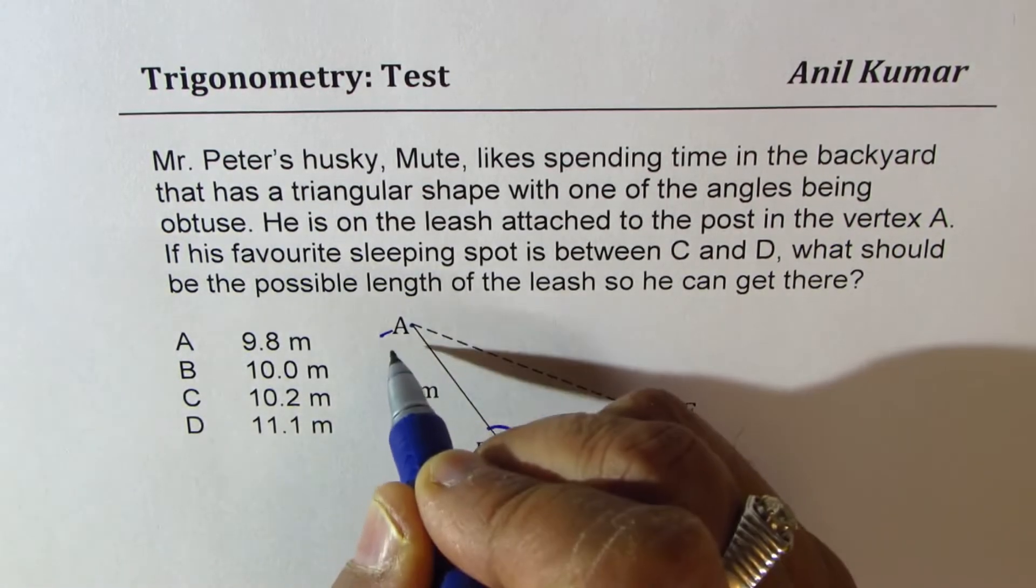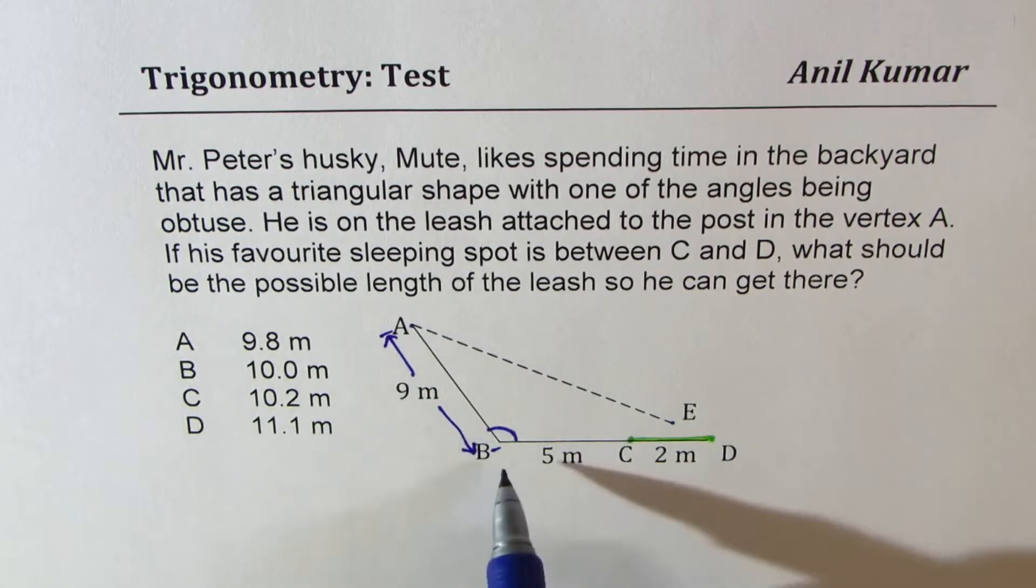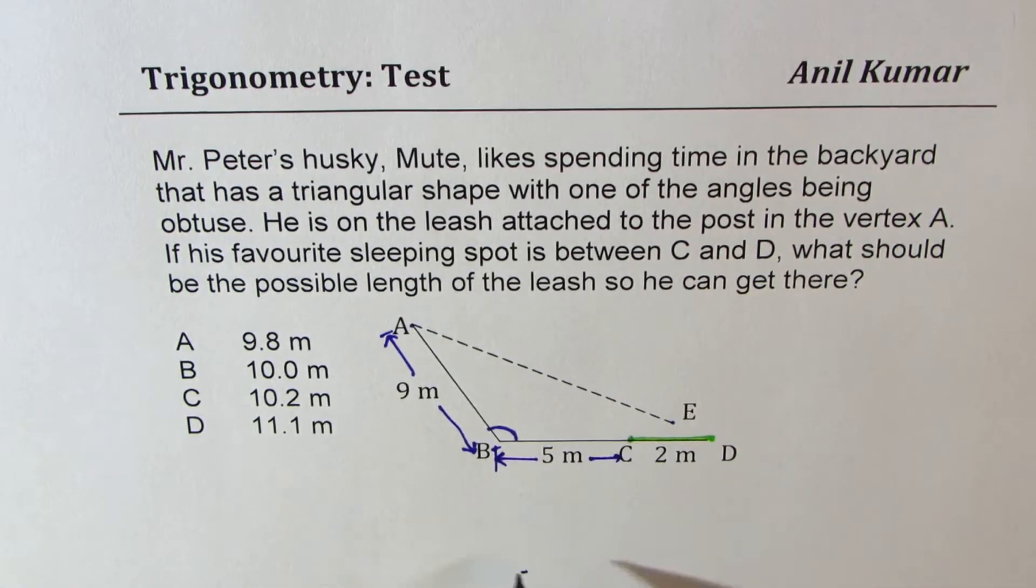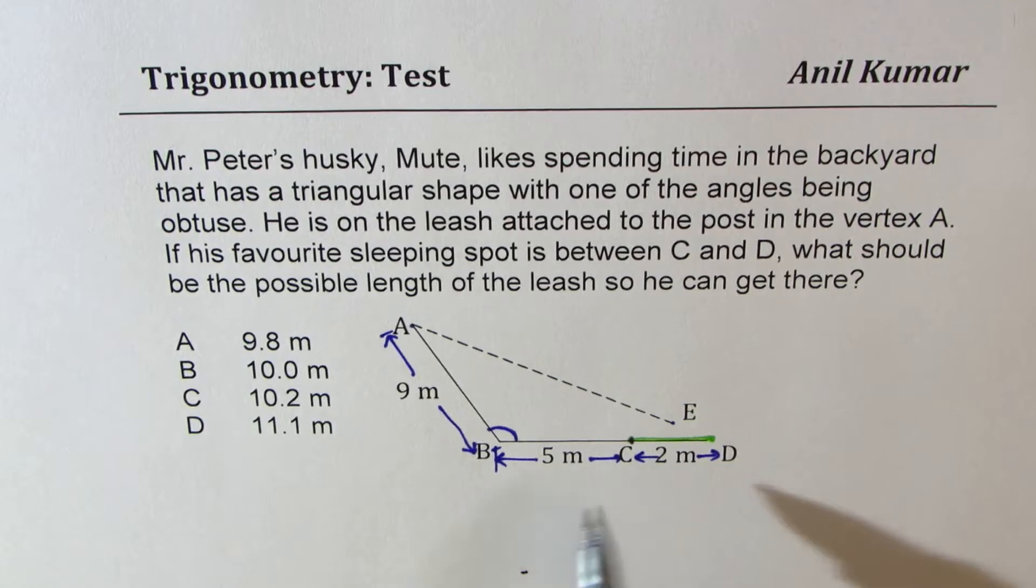That's what the question is. We are also given some dimensions here. Between A to B, it is 9 meters. Between B to C, it is 5 meters. And between C to D, it is 2 meters. You can use these values to calculate the answer. One of these choices is the correct answer.